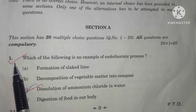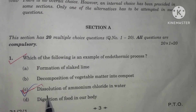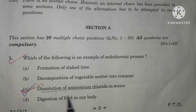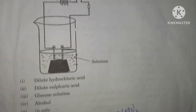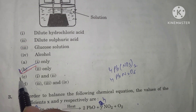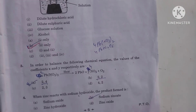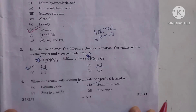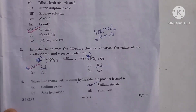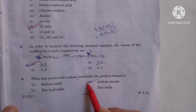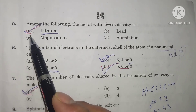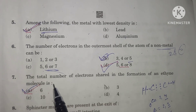In question number 1, option C is correct. In question number 2, option C is correct. In question number 3, A is the correct option. In question number 4, B is the correct option. In question number 5, option A is the correct option.